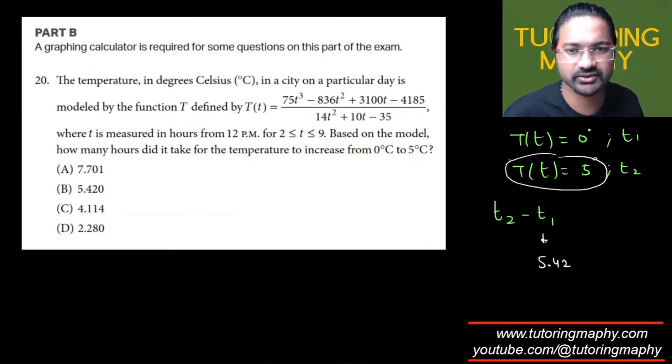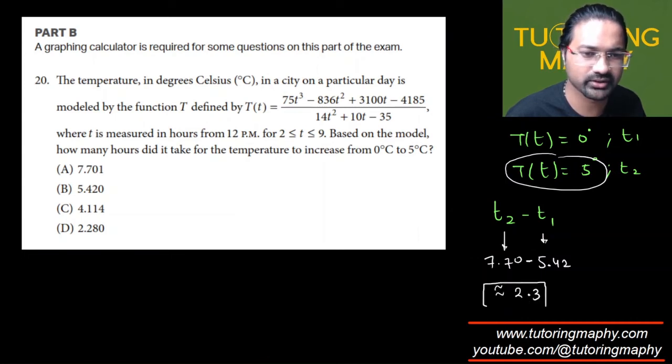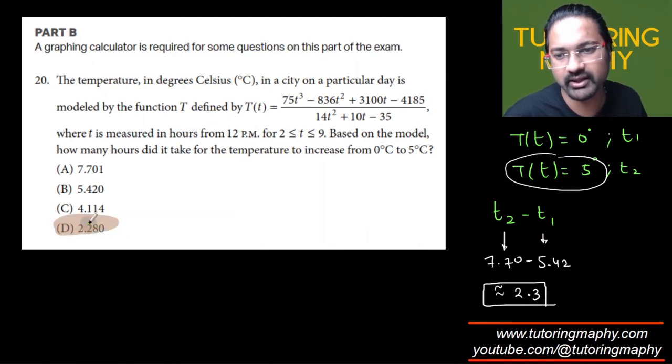the calculator that this expression is equal to 5, the corresponding value of time which I'm getting is 7.70. So if I subtract these two, I get somewhere around 2.3, which is obviously option number D as the final answer.